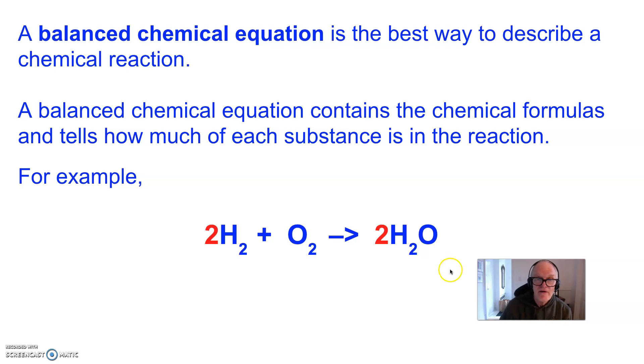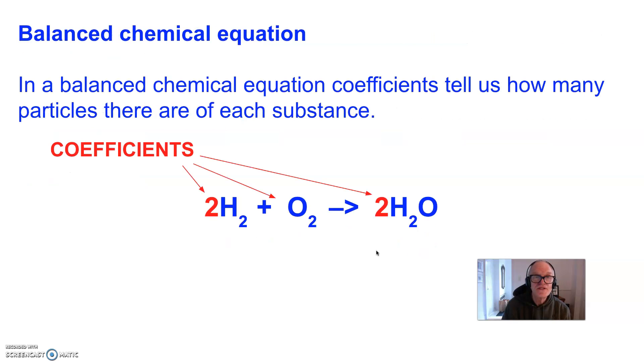So here's an example of a balanced chemical equation. And now you'll notice that we have written coefficients in front of some of the substances that are involved in the reaction. And the coefficients tell us how many particles of each substance react.